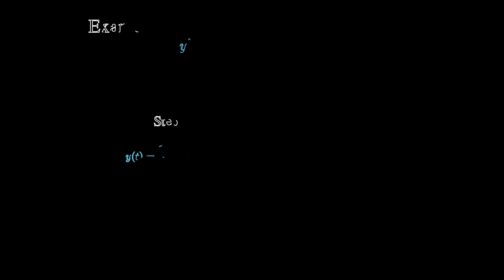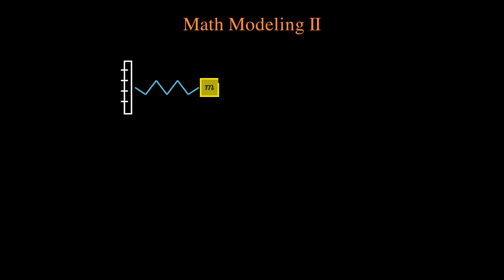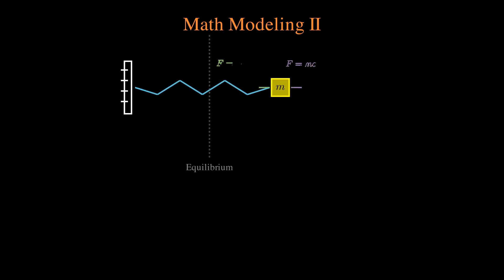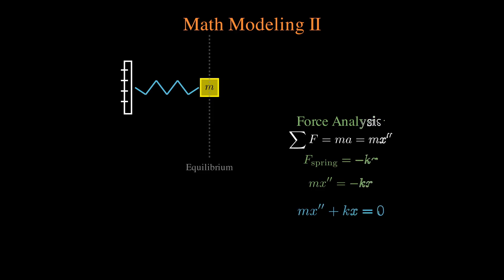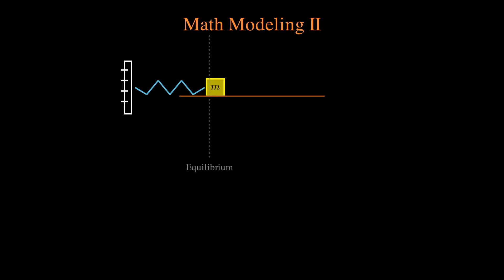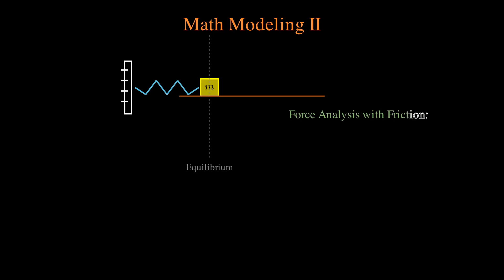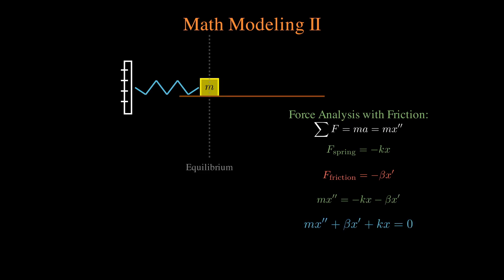Now that we know how to solve higher-order differential equations, let's look at a very common math modeling example: the mass-spring system. We have a block connected to a spring — stretch it outwards, release it, and it moves back and forth. Physics tells us there's a force f = ma pulling forward, and the spring force pulling it back depends on the spring constant. This immediately gives us a differential equation. Now let's add friction, which depends on the velocity — the first derivative of x — giving us a modified differential equation.